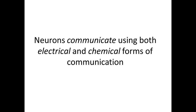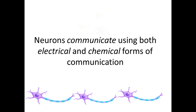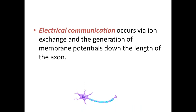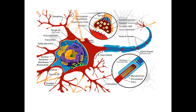Neurons communicate using both electrical and chemical forms of communication. In chemical communication, the presynaptic neuron releases a neurotransmitter which then binds to the postsynaptic cell. In electrical communication, there is a generation of action potentials throughout the length of the axon along with ion exchange. Here is a neuron consisting of many organelles such as ribosomes, polyribosomes, rough endoplasmic reticulum, Nissl body, nucleus, nucleolus, and nodes of Ranvier. A synapse consists of synaptic vesicles, synaptic cleft, and axon terminal.